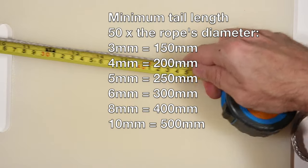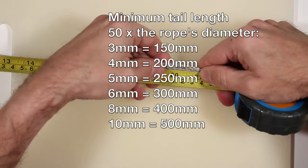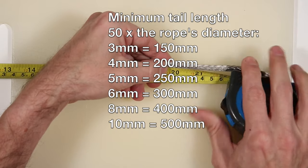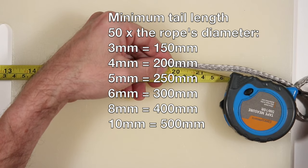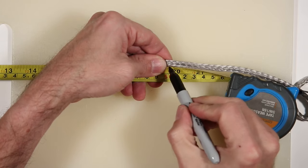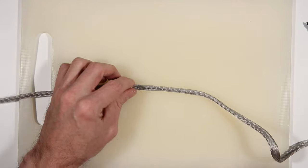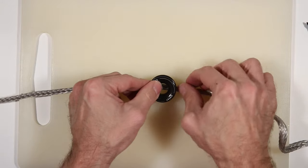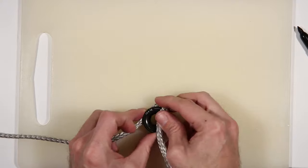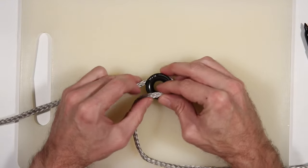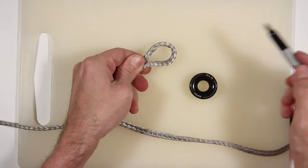Start off by measuring 50 times the rope's diameter. For this example, I'm using a longer tail so you'll be able to see clearly what I'm doing with the rope. Mark on the line. Take a low friction ring that you want to use as a thimble, place it on the mark, and wrap the line around the diameter of the ring to make a tight loop. Make a second mark where the ropes touch.